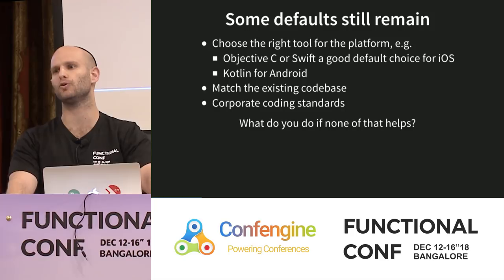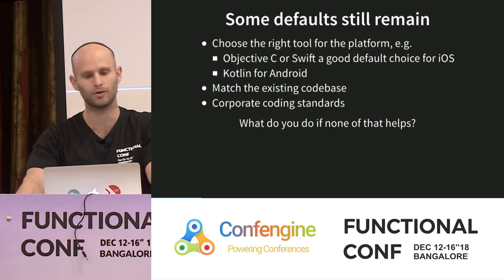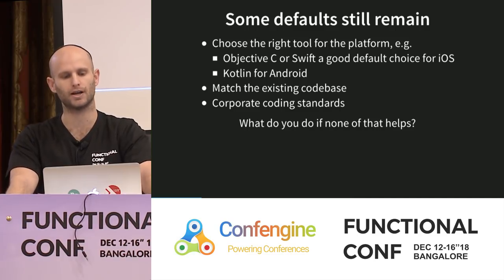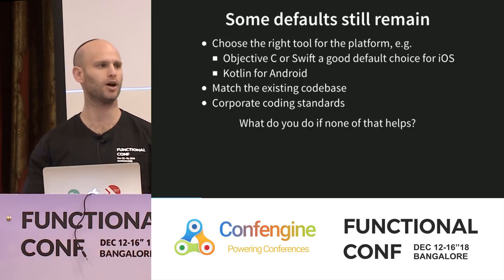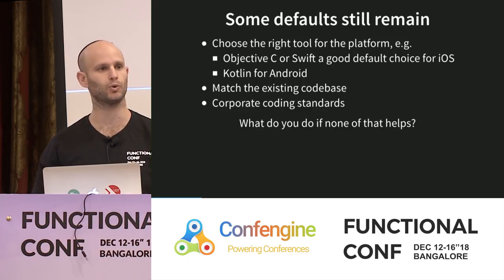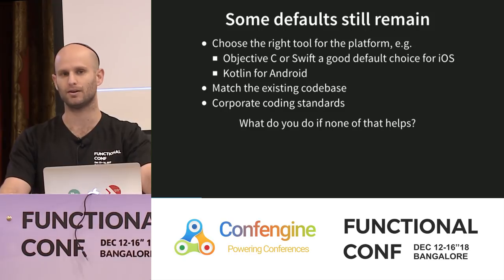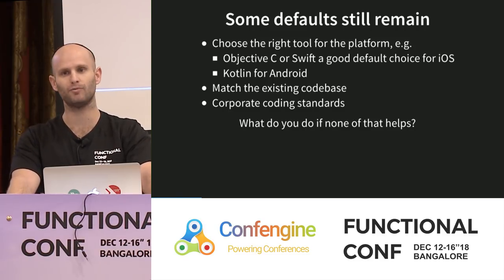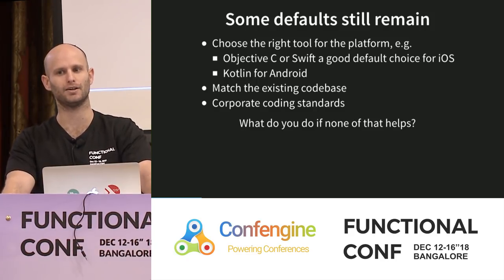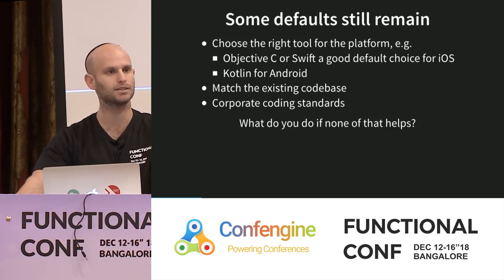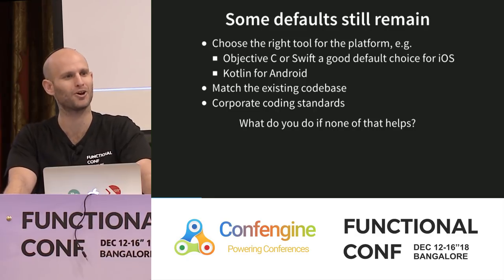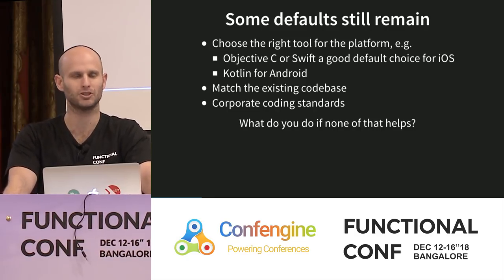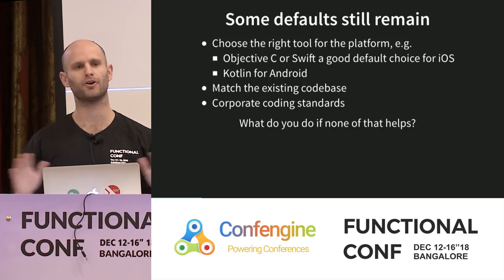There are still some defaults that remain even in a world with a thousand programming languages available. If you're on a specific platform, you may be pushed in a certain direction. If you're doing iOS development, odds are you'll end up doing Objective-C or Swift. These days for Android you're probably going to use Kotlin. If you have been thrown at a 200,000-line C codebase, you're probably not going to rewrite it in Haskell overnight. And if you're in a soul-sucking corporate job with a coding standard, you'll follow the standard. So in some cases the paradox of choice disappears.